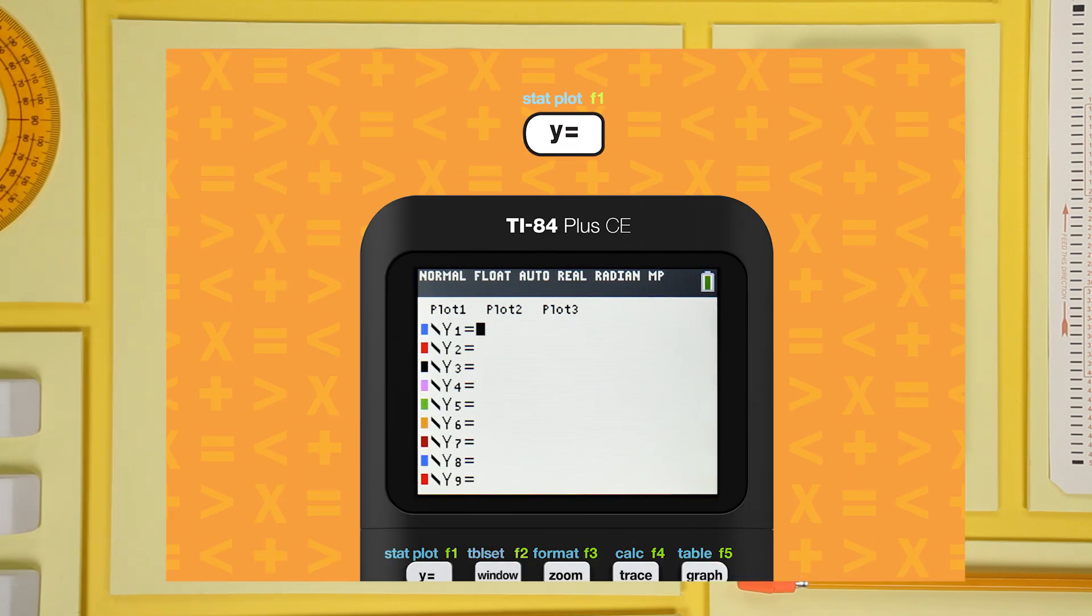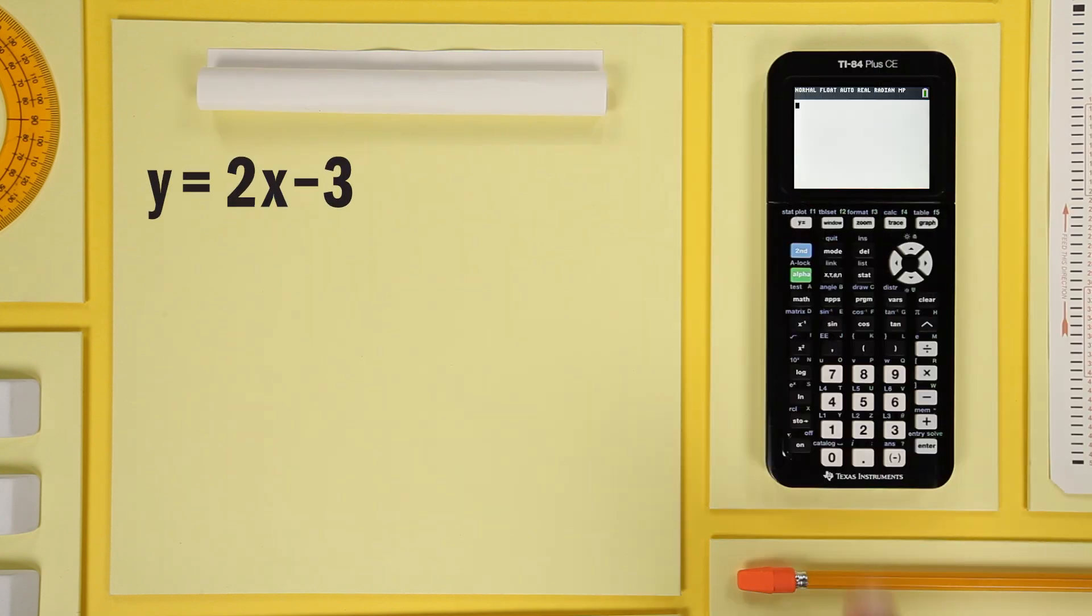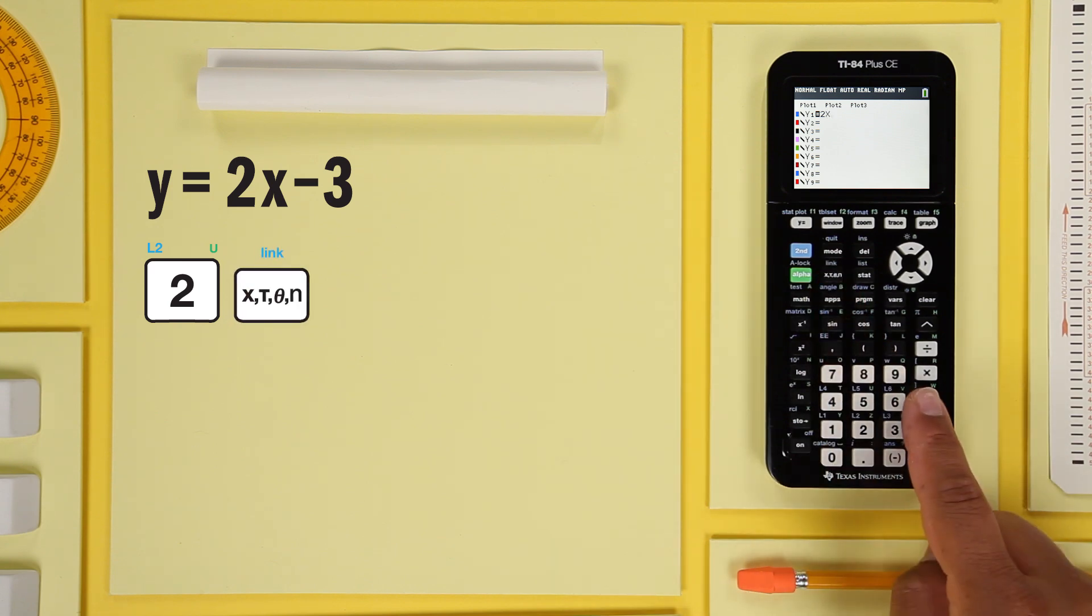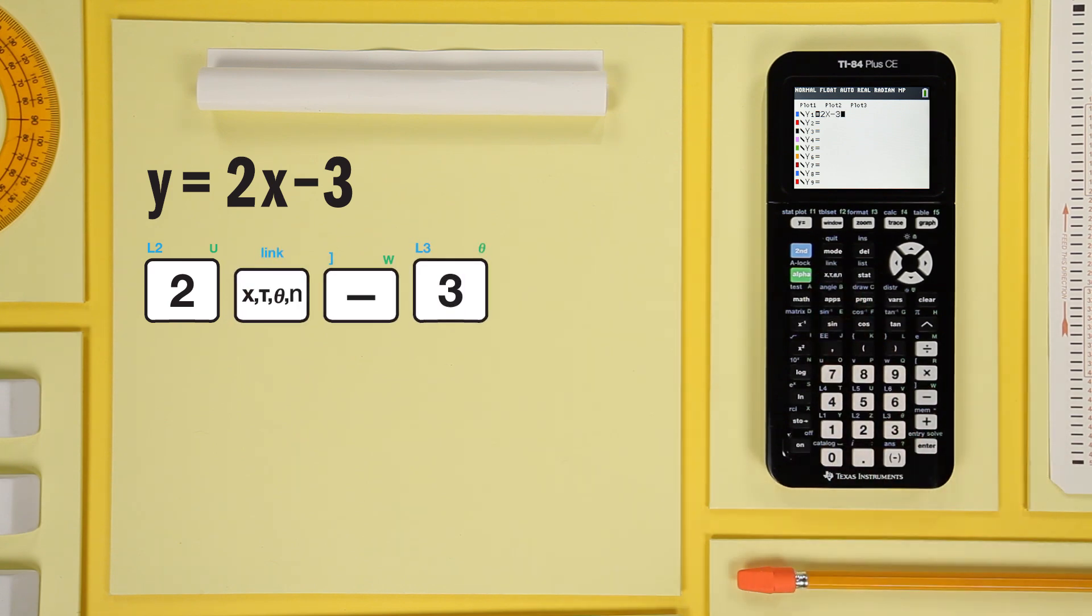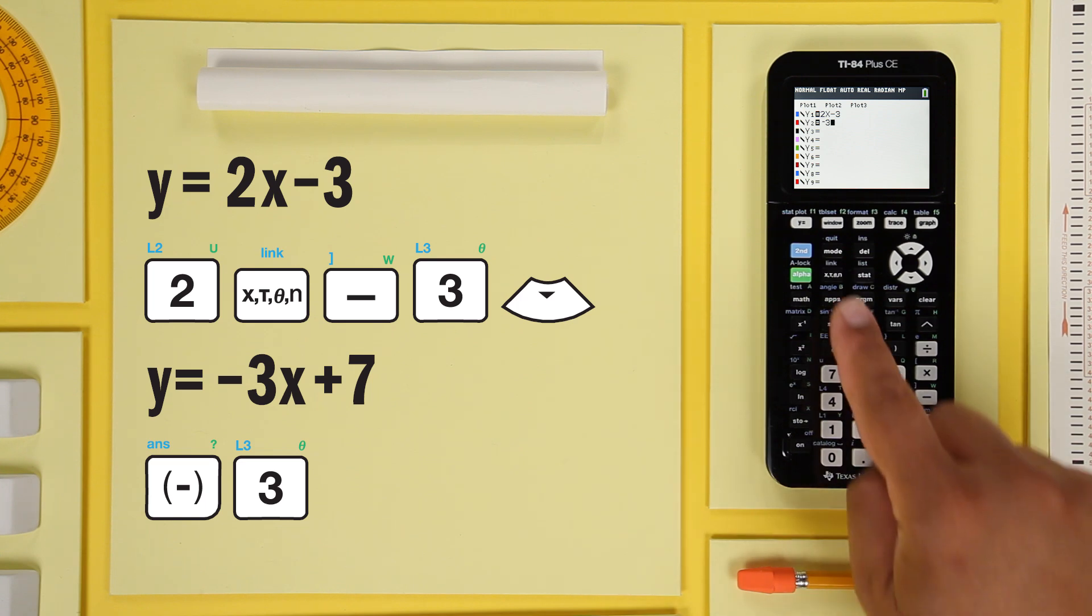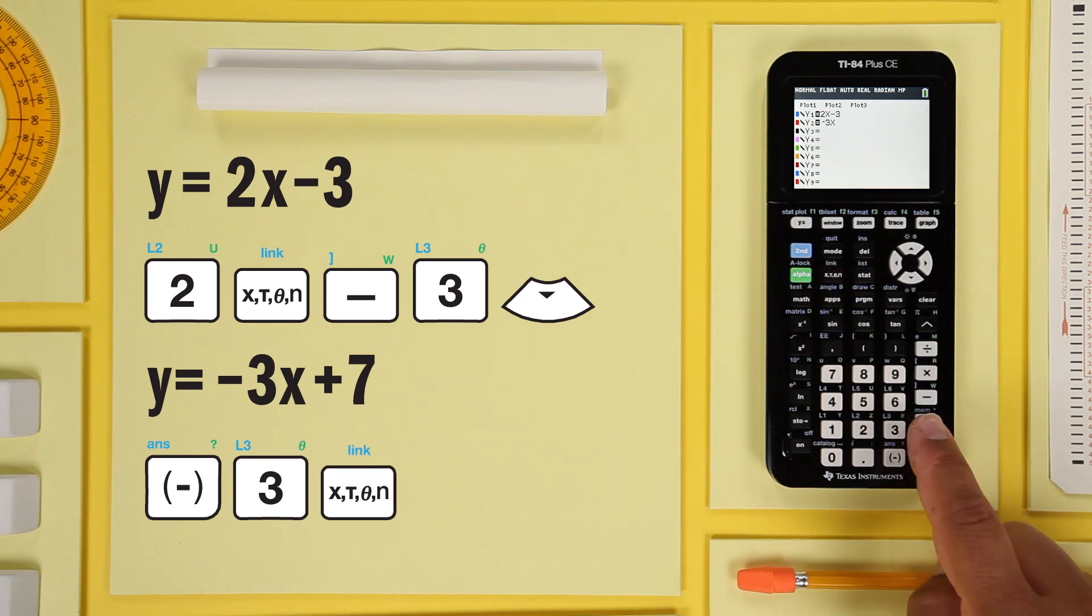Press y equals and then enter the two equations. Enter the first expression y equals 2x minus 3. Arrow down to get to the second entry line. Enter the second expression negative 3x plus 7 and enter.